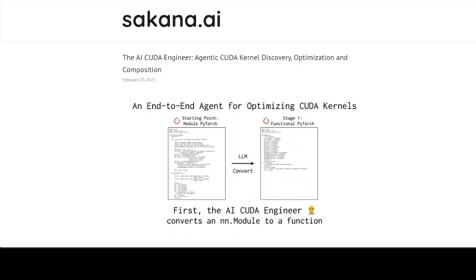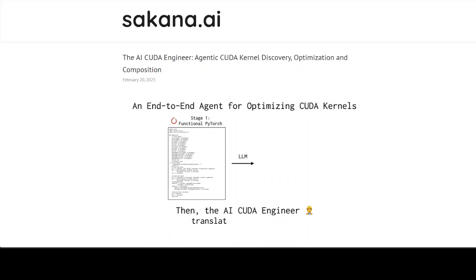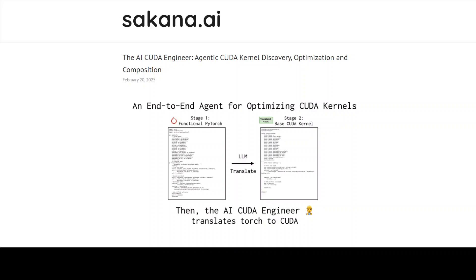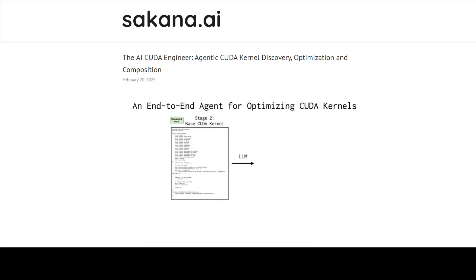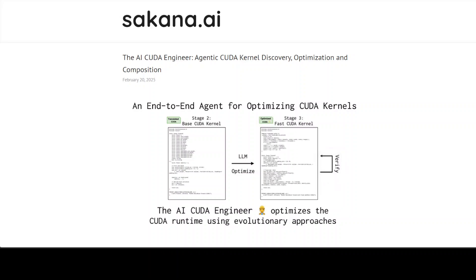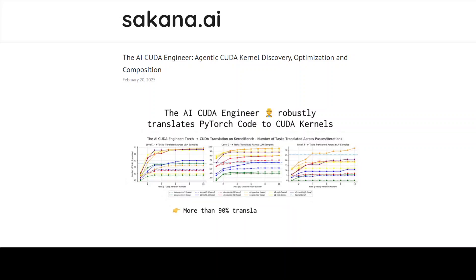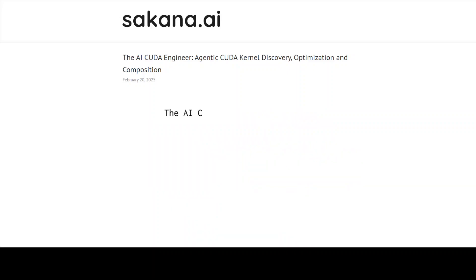CUDA, which stands for Compute Unified Device Architecture, is a parallel computing platform and application programming interface developed by Nvidia. It enables developers to harness the power of Nvidia GPUs for general purpose computing beyond just graphics rendering. CUDA provides a set of tools, libraries, and programming languages that enable developers to create high-performance applications that can run on Nvidia GPUs — and that is one of the main reasons why Nvidia has such a huge and seemingly unbreakable monopoly at the moment.